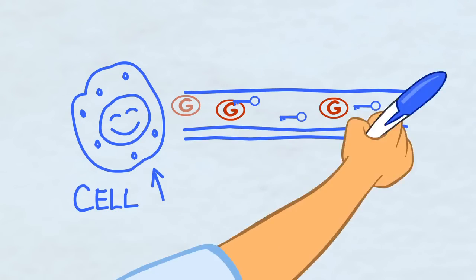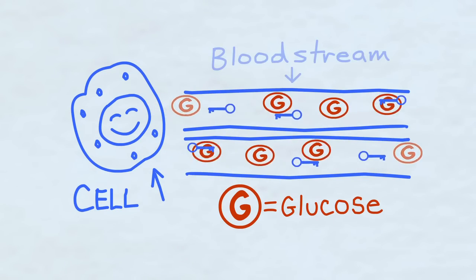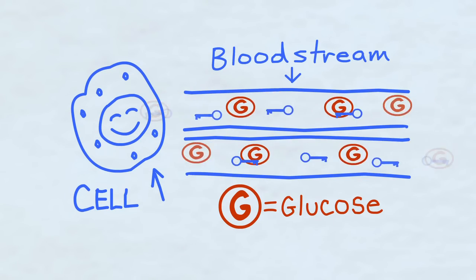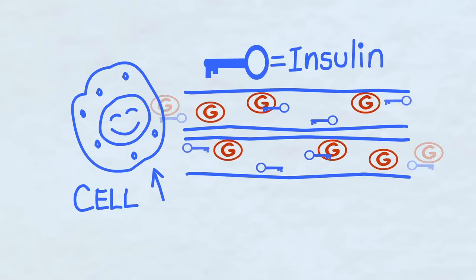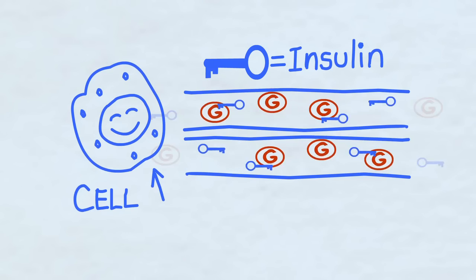Our body uses a special sugar called glucose as a fuel to power all the cells of our bodies. And remember that the cells use a special chemical called insulin to control just how much glucose there is